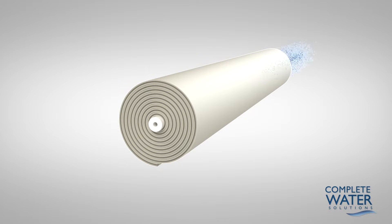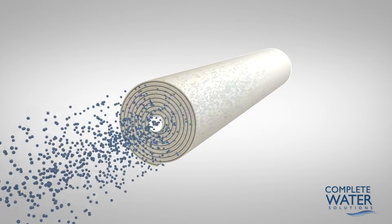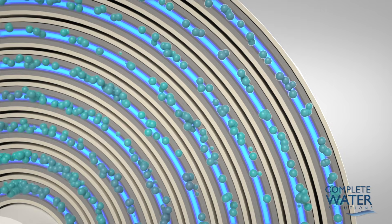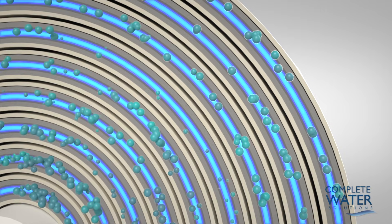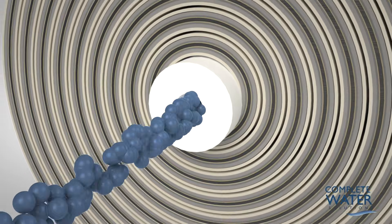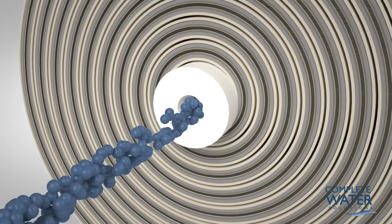Feed water is forced through the feed channel spacer and into the barrier layer of the membrane. Water passes through the membrane surface into the permeate channel. It flows in a spiral direction and collects in the core tube. This water is the final reverse osmosis water or permeate.